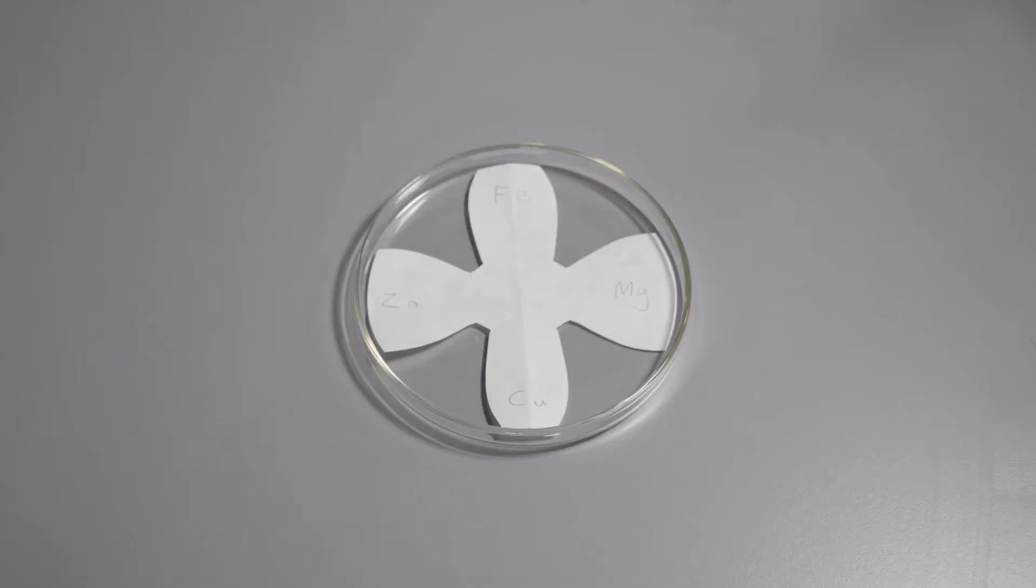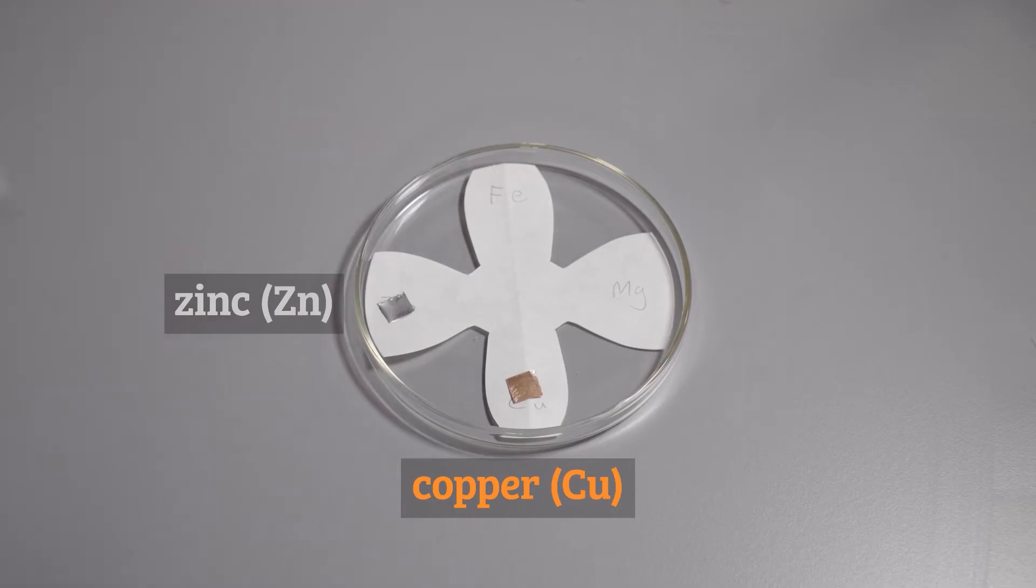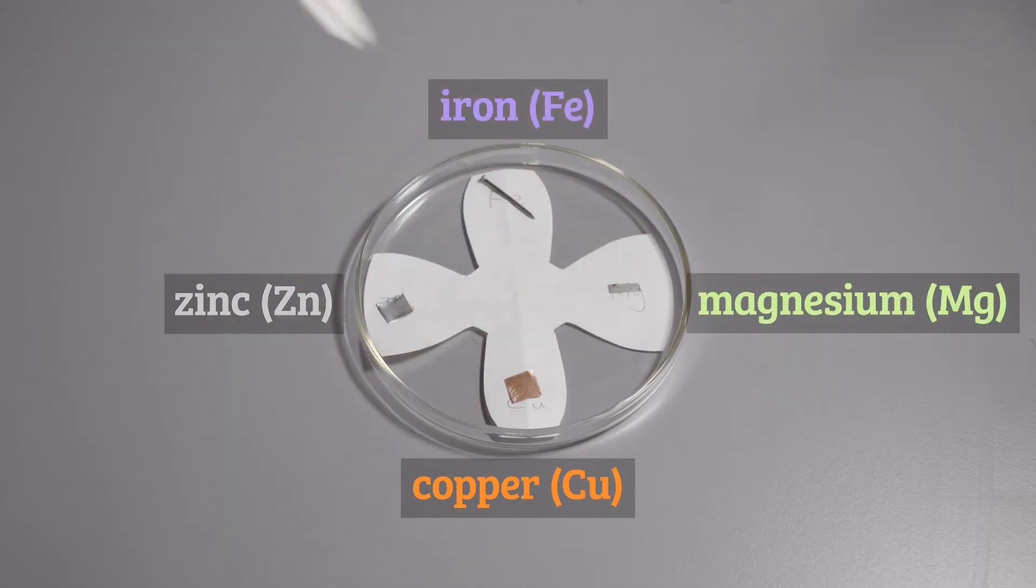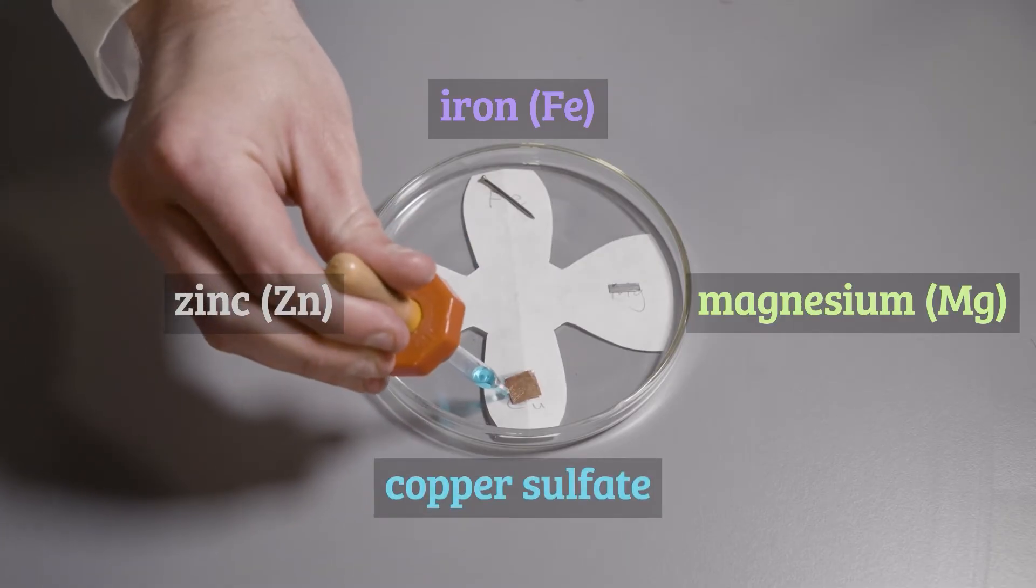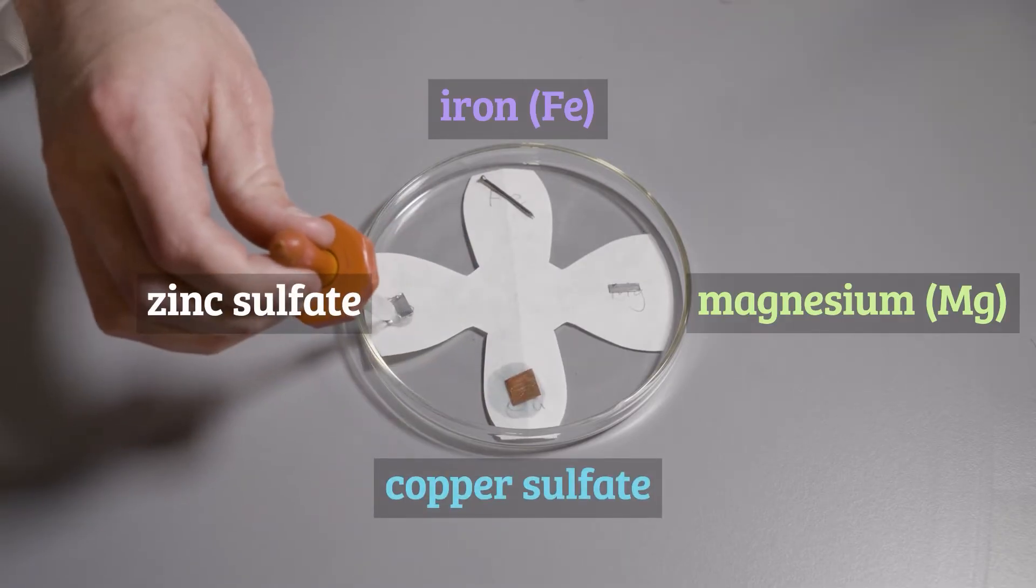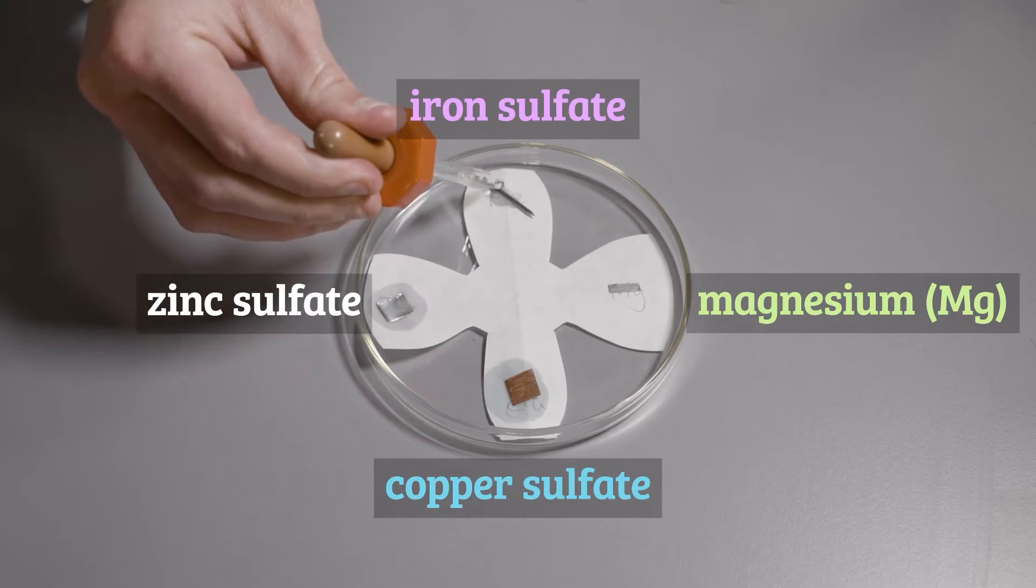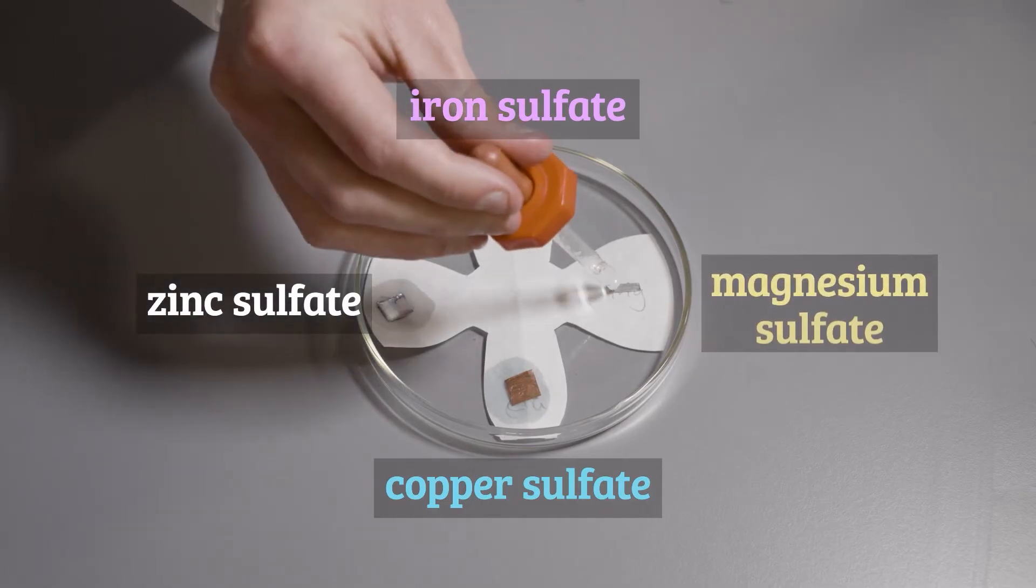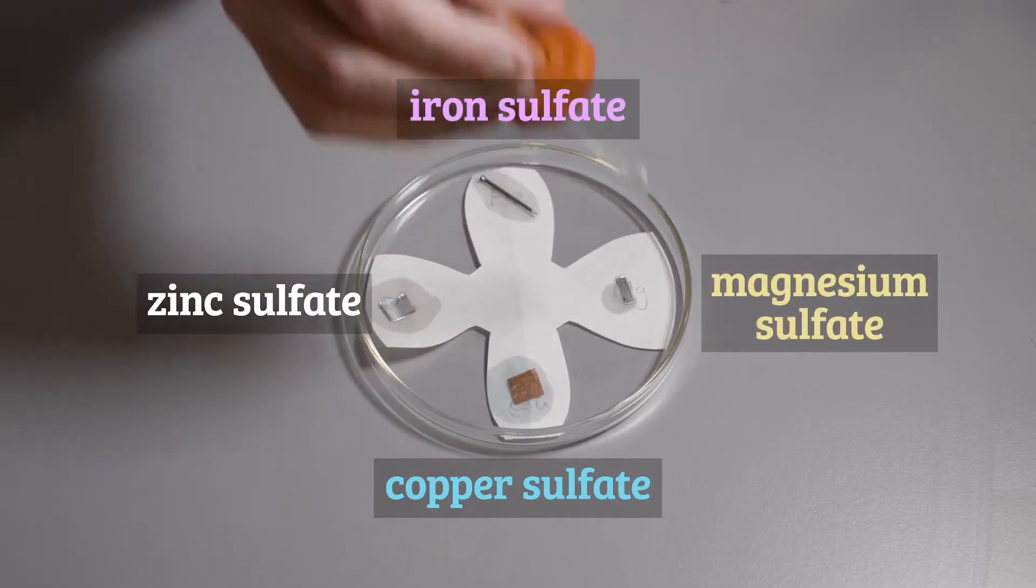As you can see I have laid our filter paper into a petri dish. I'm now going to add our four metals to the different petals of the flower. As you can see I've also labelled the petals using pencil. I'm now going to add a few drops of one mole per decimetre cubed solutions containing those metal ions onto the filter paper underneath the pieces of metal. I'm using sulfate solutions here.